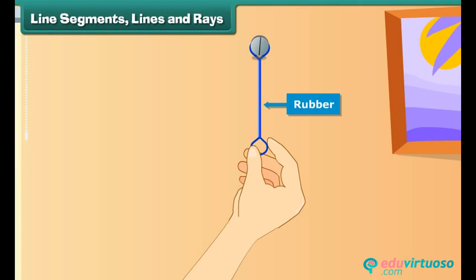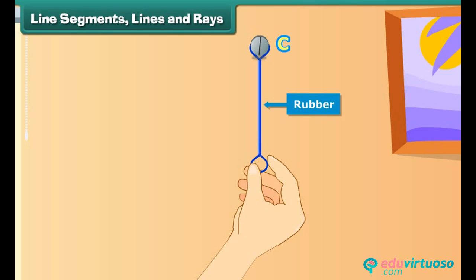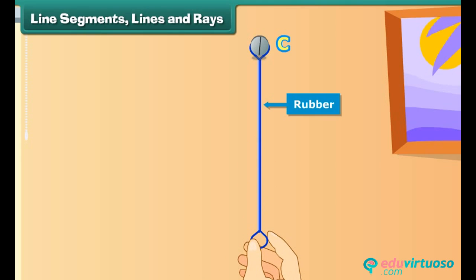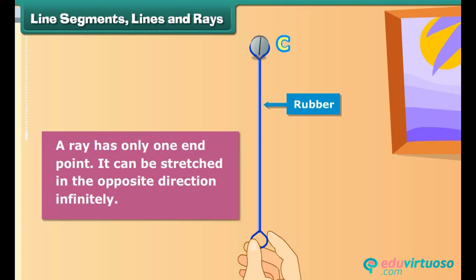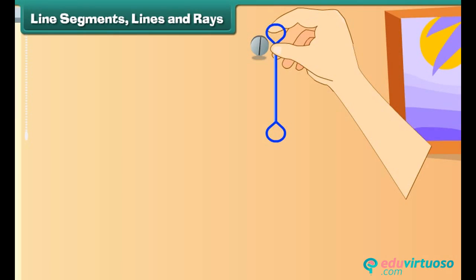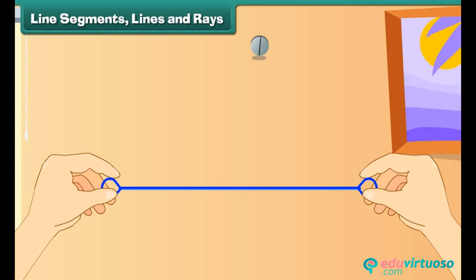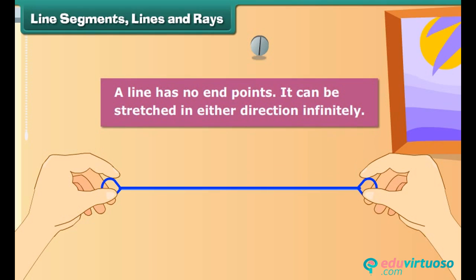Look at this thin strip of rubber. Let us nail it to the wall and name the point C. The other end of the rubber is free — let us stretch it: first a little, then a little more, and then some more. What we get is a ray. A ray has only one end point and can be stretched in one direction infinitely. Let us now remove the nail and stretch the rubber in the other direction. We now have a line. A line has no end points and can be stretched in either direction infinitely.